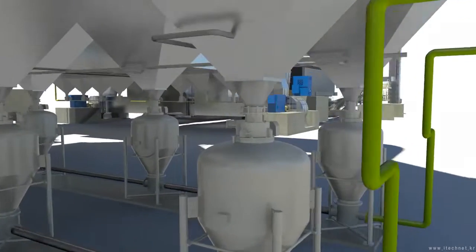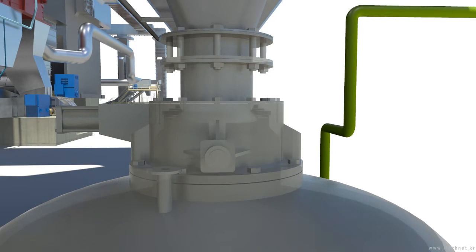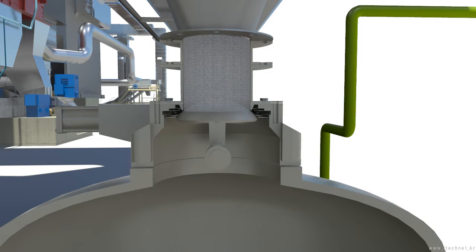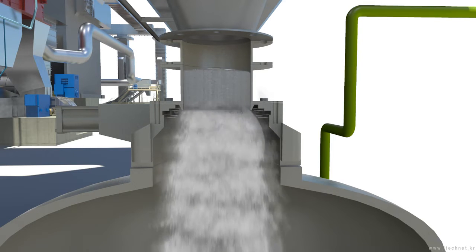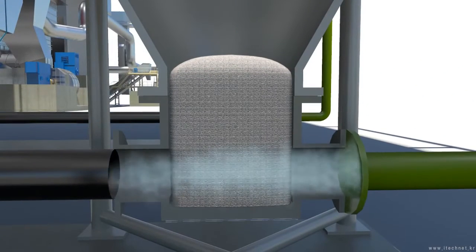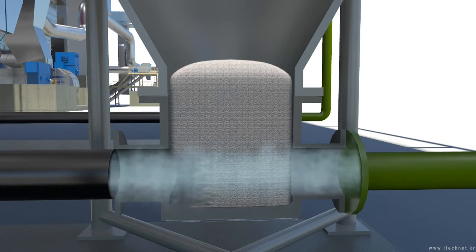The ash which is collected at the hopper of each system drops into the inside of pump after opening the valve. When a certain amount of ash fills up the pump, the valve is closed and sealed so that the ash won't fall into the pump. The ash which is collected in the pump is transferred through the pipe by compressed air of the compressor.